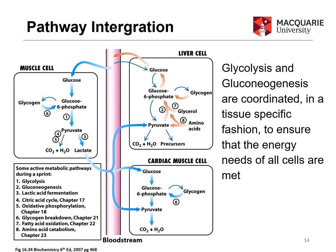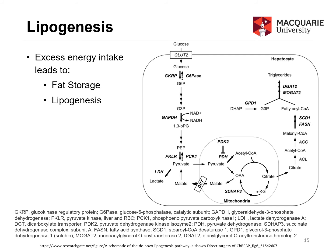Some of the lactate produced from the Cori cycle might be used in cardiac muscle to enter the Krebs cycle, and blood glucose may also be used by cardiac muscles. What's happening in the liver via gluconeogenesis isn't necessarily what's happening in the muscle cells via glycolysis. In a well-fed state where we've taken in a lot of fats, proteins, and carbohydrates, fats can go directly to fat storage. But what happens to the other macronutrients if we're in a well-fed state?